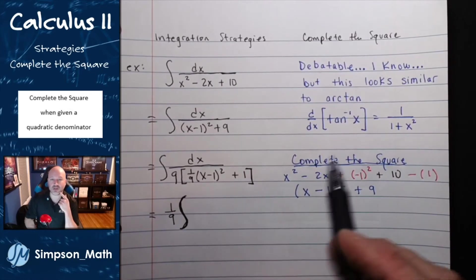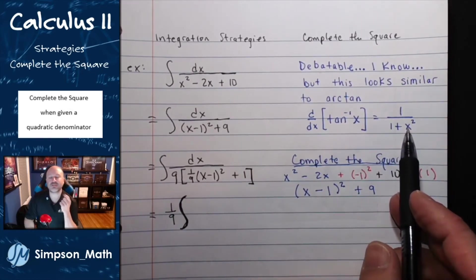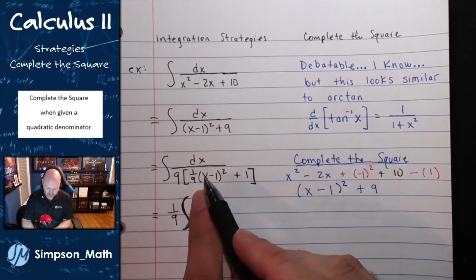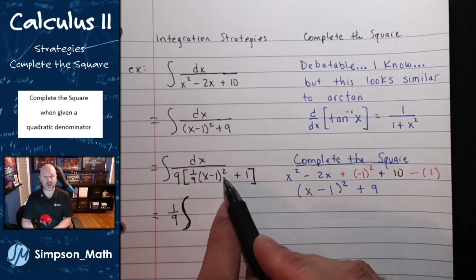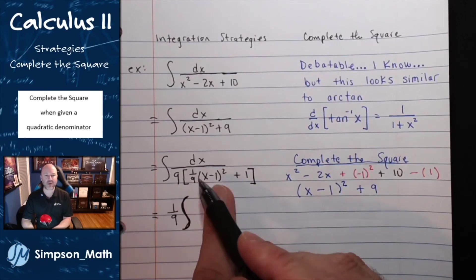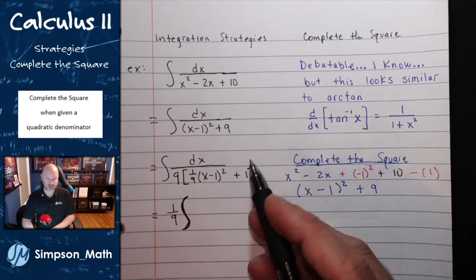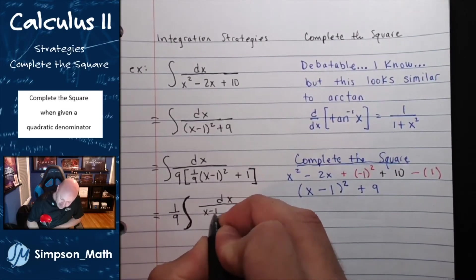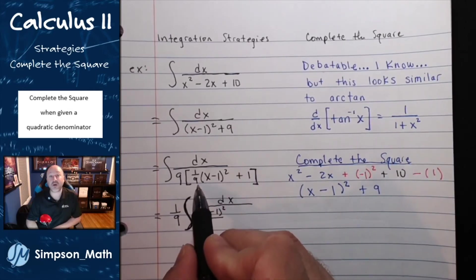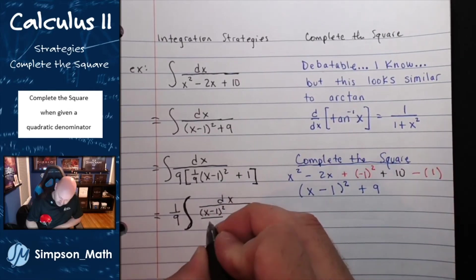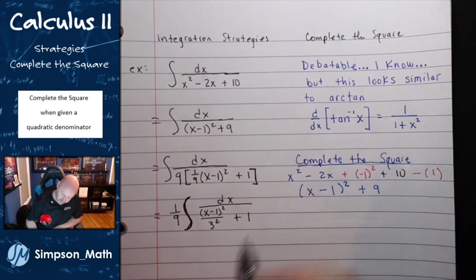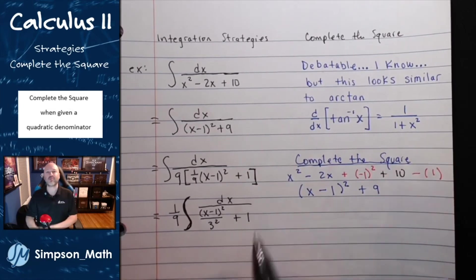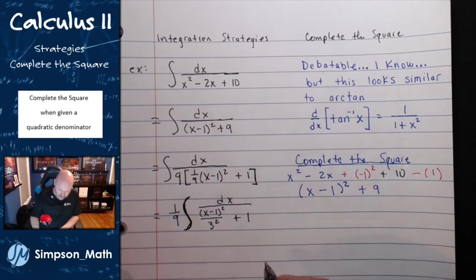Alright. Now I have the 1 in that arc tangent form, but if I want to use this u substitution, I need one thing that is being squared. And right now I have a 1 ninth times x minus 1 squared. So I need to somehow rewrite this. So I think I can be a little bit clever here. Let's see if I can rewrite this. I'll call this x minus 1 squared over the 9, but I'm going to call the 9, 3 squared.